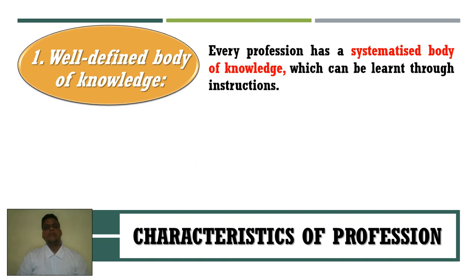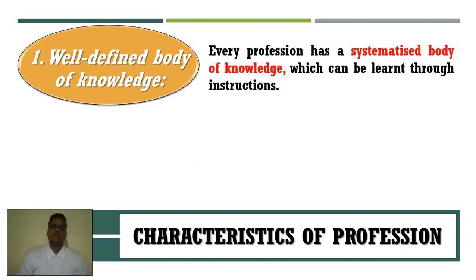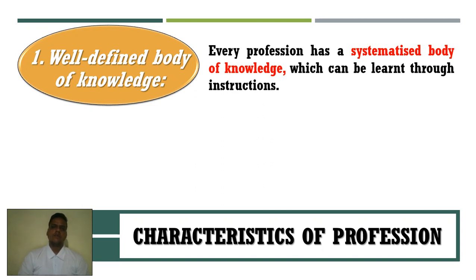If you want to become an engineer or scientist, you choose the science stream. In science you have physics, chemistry, biology, and maths. You select either biology or maths — if you select biology it guides you toward becoming a doctor; if you select maths it guides you toward becoming an engineer. Choosing a specific line for your goal is considered a systematic body of knowledge.